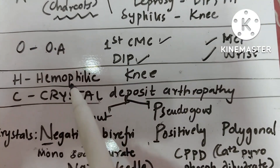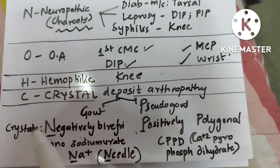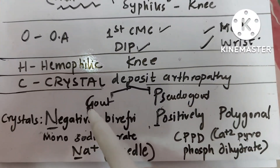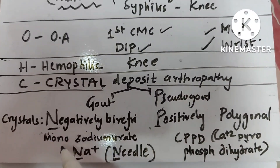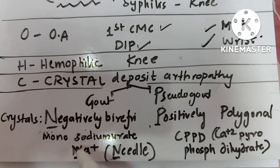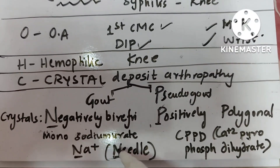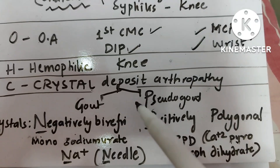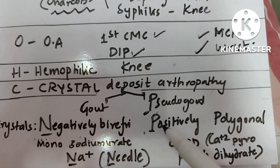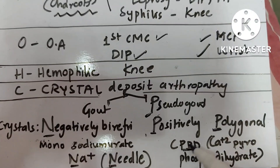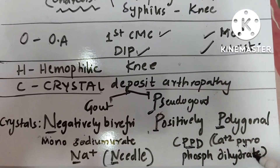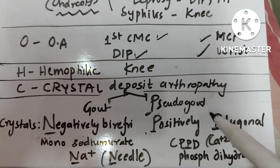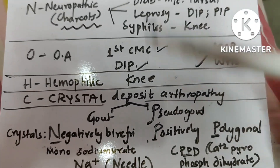In hemophilic arthritis, the knee joint is most commonly involved. For crystal deposition arthropathy, there are two important diseases: gout and pseudogout. In gout, the crystals deposited are monosodium urate — they are needle-shaped and negatively birefringent (all N's: Na, needle, negative). In pseudogout, it is all P's: positively birefringent, polygonal in shape, and CPPD (calcium pyrophosphate dihydrate) deposits.